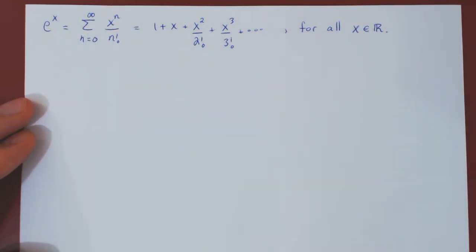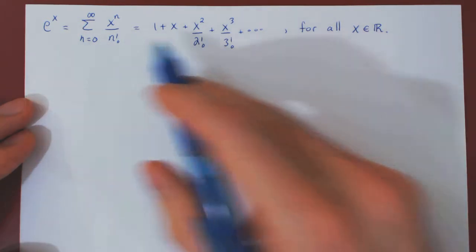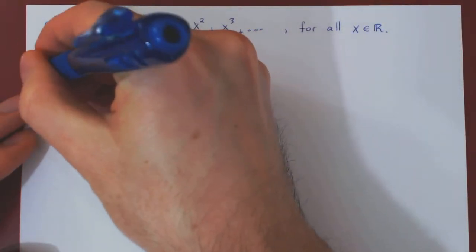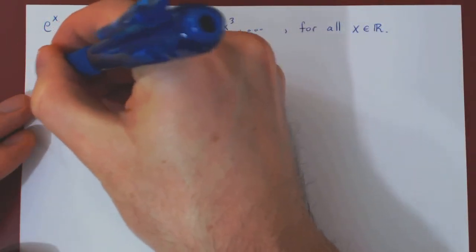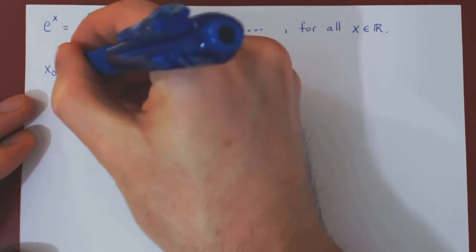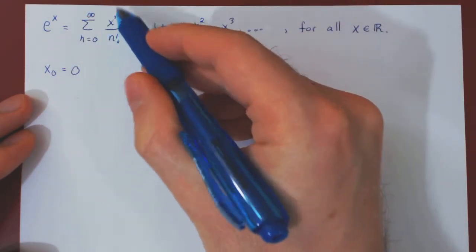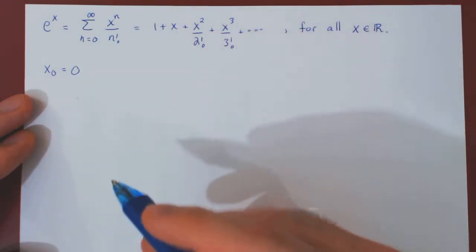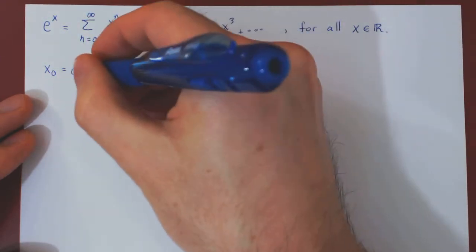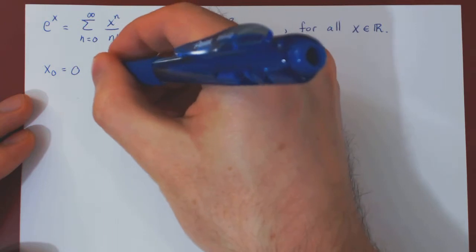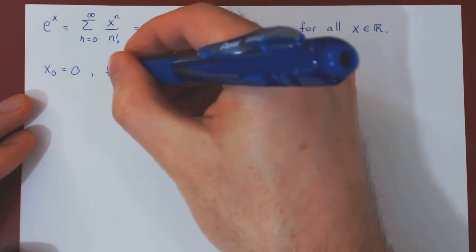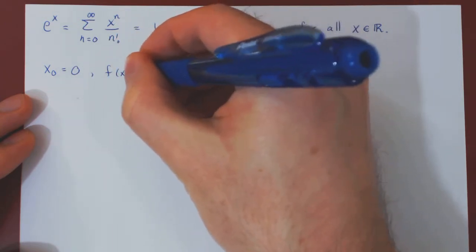Let's see what Taylor's theorem gives us in this particular case. The center of the series x0 is equal to 0, as we have a Maclaurin series, and the function f of x is e to the x.